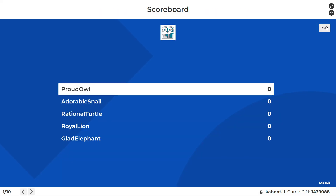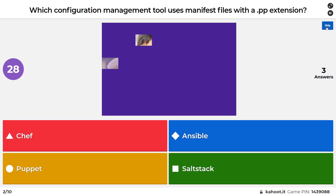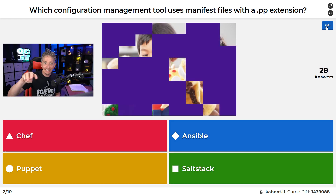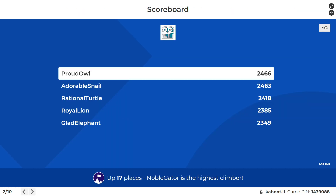Let's see who's on the podium. ProudOwl, Fearless, followed by those other four. Here's question number two: which configuration management tool uses manifest files that have a .pp extension? As a CCNA candidate, we do not have to be masters of Puppet, Chef, or Ansible, but it would be good to recognize that these are tools that can be used for network automation, management, and provisioning. Puppet is certainly one of the three called out on the CCNA blueprint.